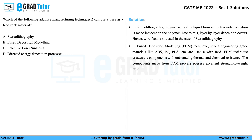In the case of fused deposition modeling, which is the FDM technique, strong engineering grade materials like ABS, PC, PLA, etc. are used as a wire feed. FDM technique creates components with outstanding thermal and chemical resistance. The components made from the FDM process also possess an excellent strength to weight ratio.